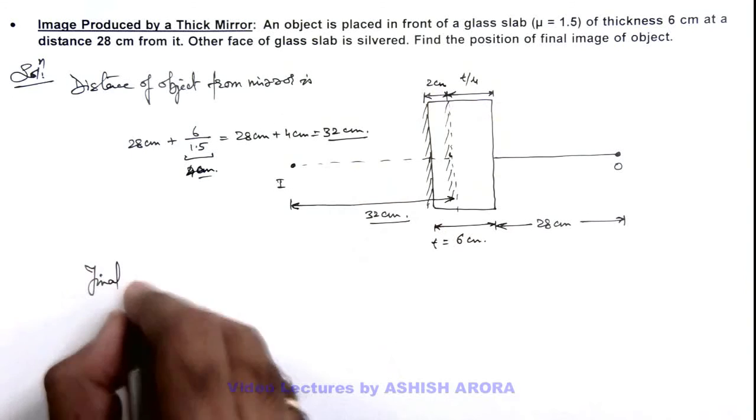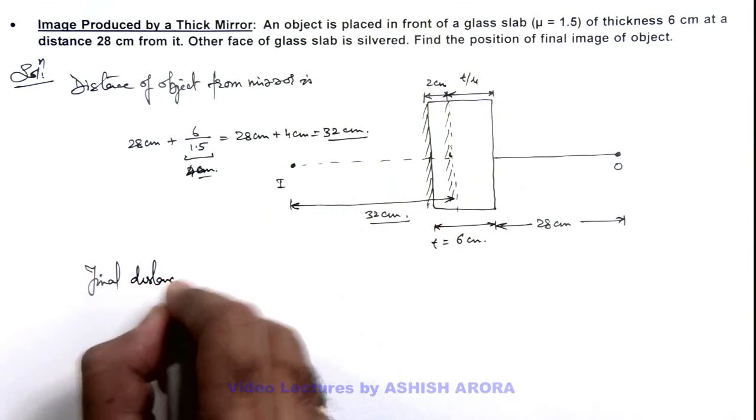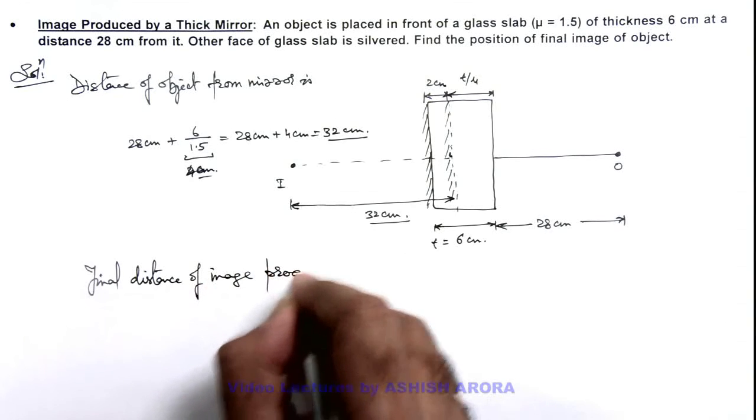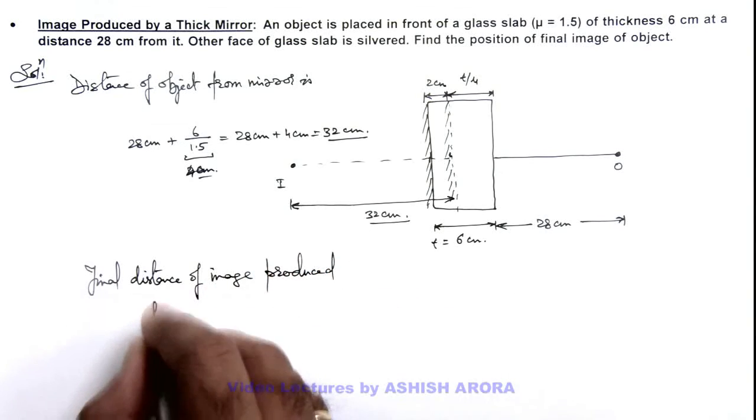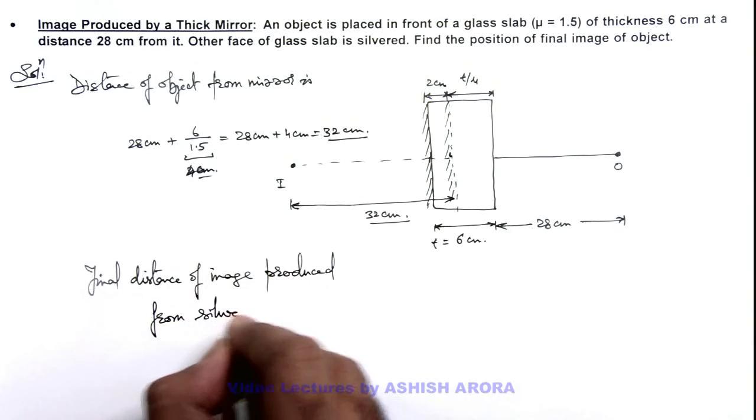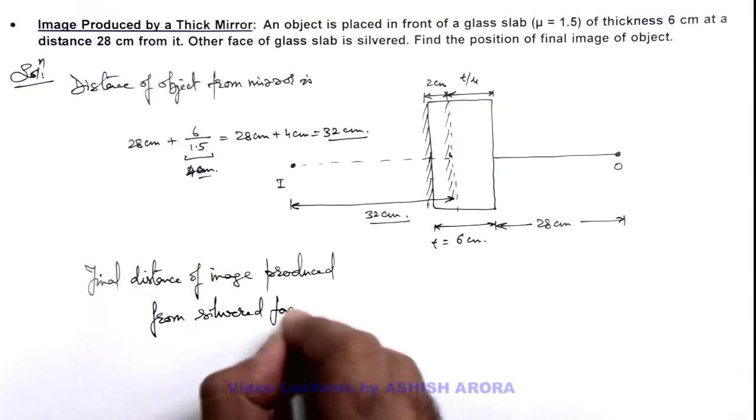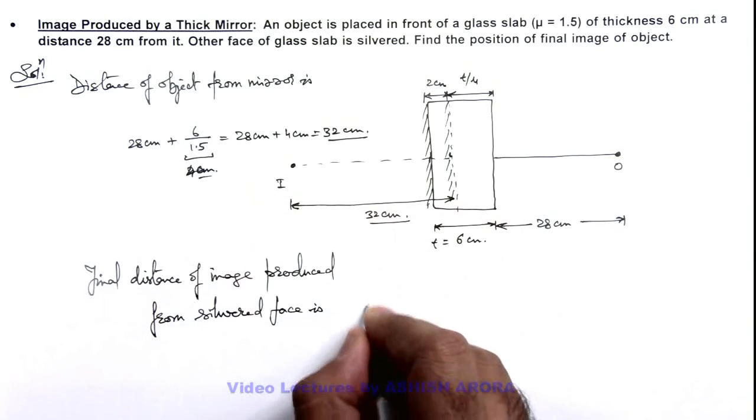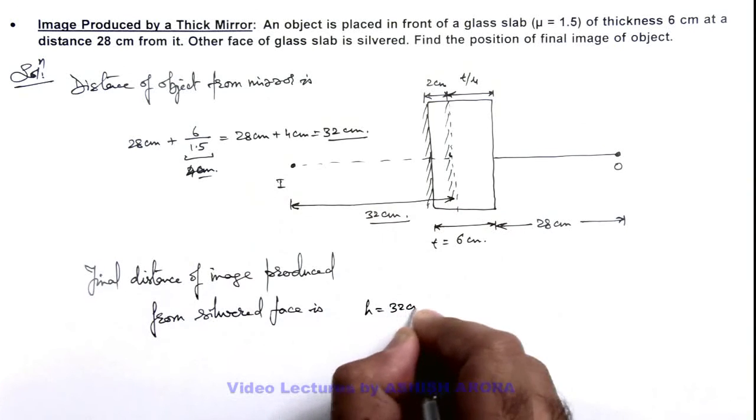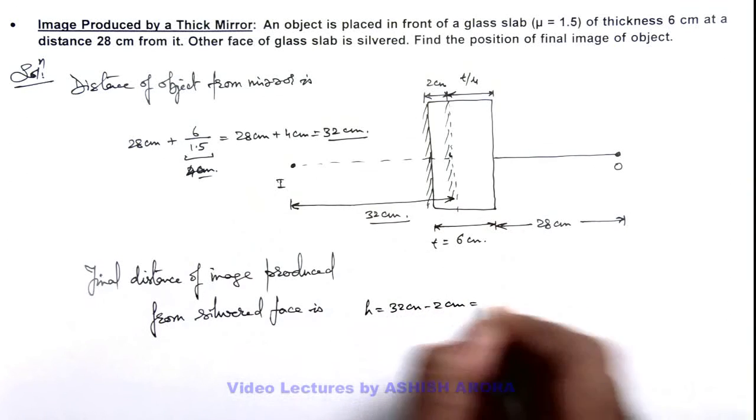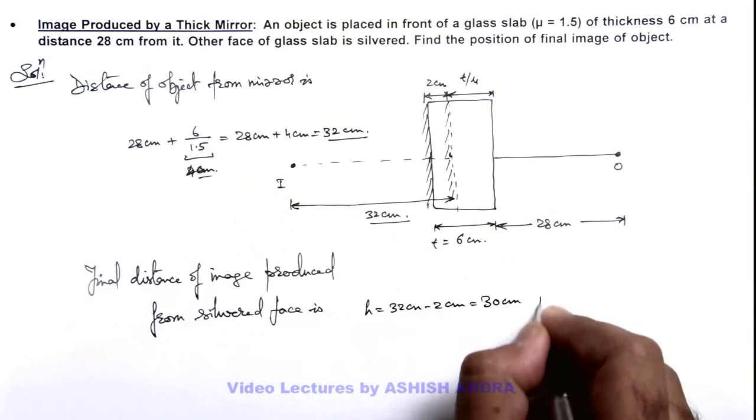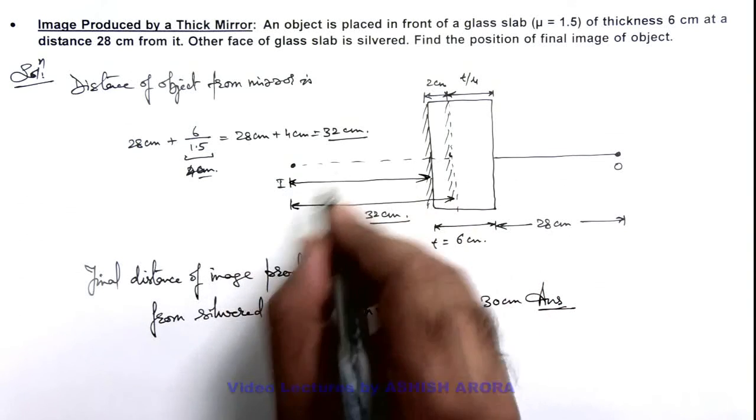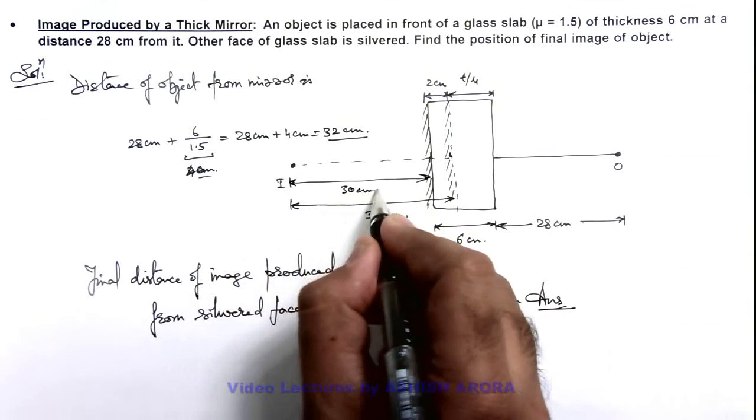So we can directly write the final distance, the position of image produced from the silvered face. We can simply write h equals 32 centimeters minus 2 centimeters, that will be 30 centimeters. That is the answer for this problem. So this actual distance of image produced from the silvered face is 30 centimeters.